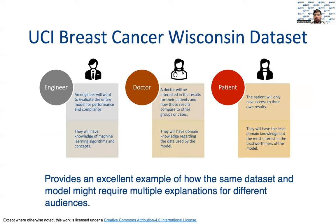This dataset also provides an example of how the same dataset and model might require multiple explanations for different audiences. An engineer, for example, will want to evaluate the entire model. They will already have knowledge of how a given model works, so their explanation can be fairly technical. A doctor won't care as much about the entire model — they will want to evaluate the specific results for their patients. They will have a lot of domain knowledge involving breast cancer, so they will be probably most interested in diving deeply into the data. Finally, the patient themselves would probably have little understanding of machine learning or medicine. They may have the least trust and the most interest in understanding how the model has come to its decision.